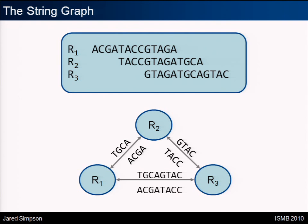We see at the bottom this edge between R1 and R2, and R2 and R3. The property of transitive edges is that the label of a transitive edge is seen as a concatenation of non-transitive edges — these are called irreducible edges. The prefix of transitive edges is the labels of the irreducible edge, corresponding to R1 and R2. This is going to be important when we consider the string graph, so we go ahead and simplify the graph.